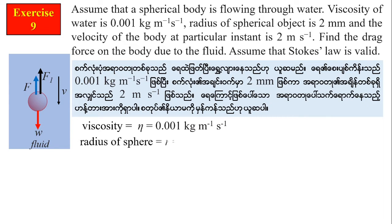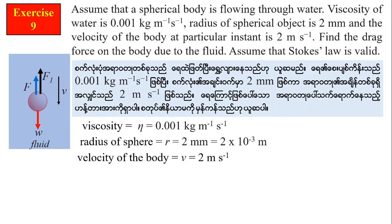The radius of the sphere r is equal to 2 mm, which is 0.002 meters. The velocity of the body is 2 meters per second. Assuming Stokes' law is valid.